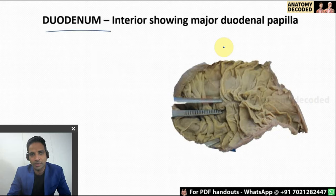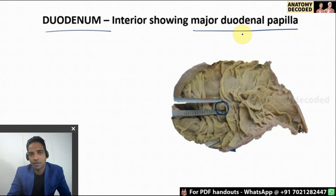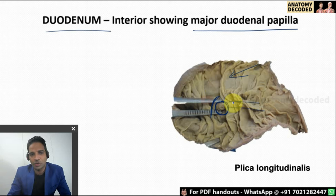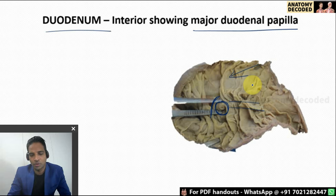Let us look at the interior of the duodenum. The interior will show one characteristic opening called the major duodenal papilla. There is a main pancreatic duct as well as accessory pancreatic duct — the main pancreatic duct opens into the major duodenal papilla. There is a fold above this called plica semicircularis, and a longitudinal fold just below the major duodenal papilla called plica longitudinalis. These are key features of the interior of the duodenum.